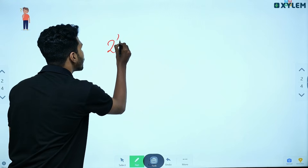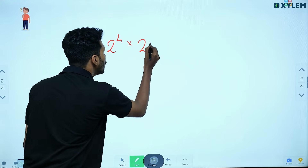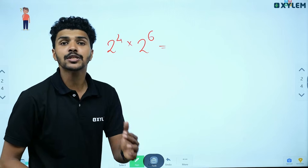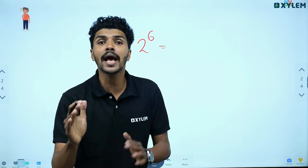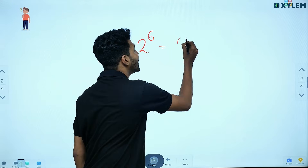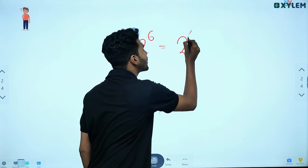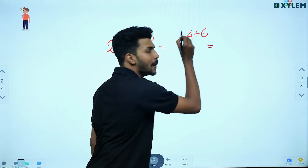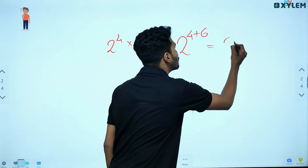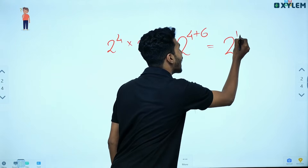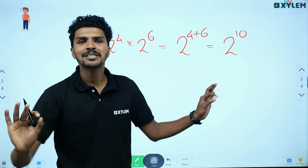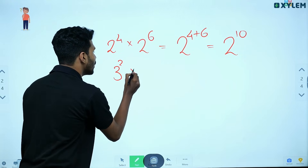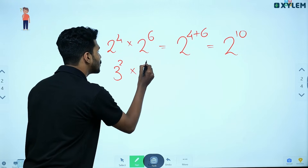For example, 2 raised to 4 into 2 raised to 6 equals 2 raised to 4 plus 6, which is 2 raised to 10. Similarly, 3 squared into 3 raised to 7 equals 3 raised to 2 plus 7, that is 3 raised to 9.